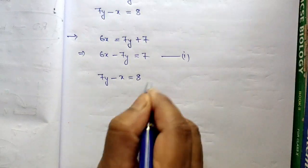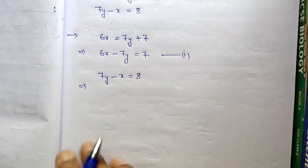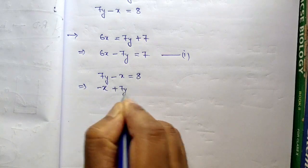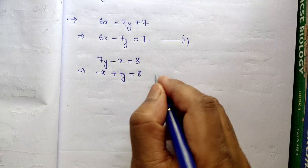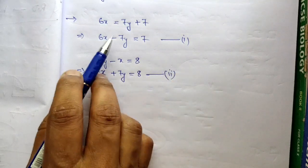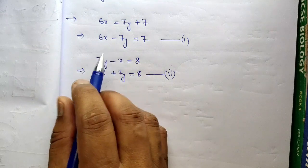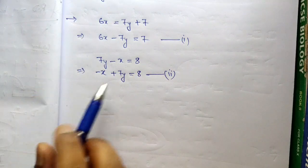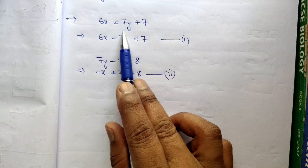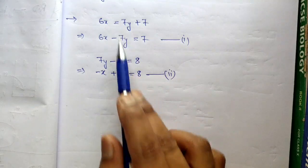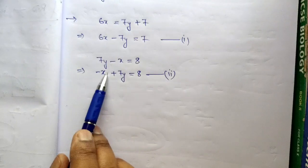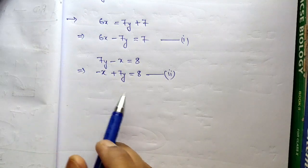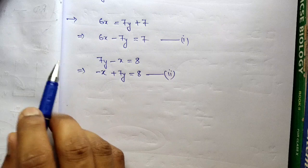For convenience, write X first and then Y in each equation. So these become Equation 1 and Equation 2. In the elimination method, we need to eliminate one term — either the term containing X or the term containing Y. You can choose either one; it's totally up to you. Let's say we choose to eliminate X.